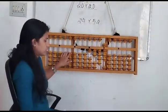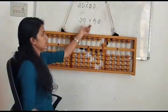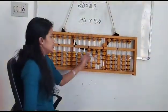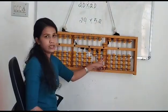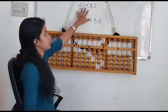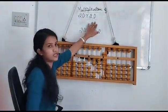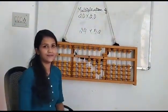The answer for 24 multiplied by 52 is 1, 2, 4, 8. This is how we solve the multiplication of double-digit into double-digit using the abacus tool. Thank you.